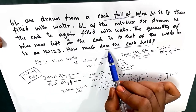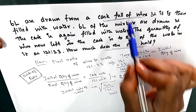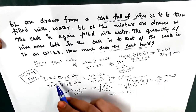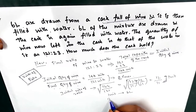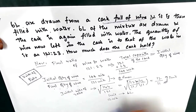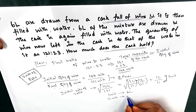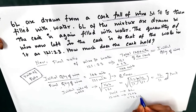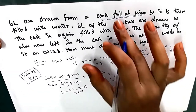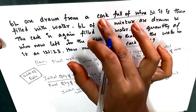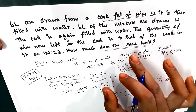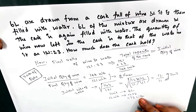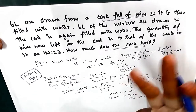The question asks how much the cask holds, which is the initial quantity of wine — 12 units. So 12 units = 12 × 6 = 72 liters. 72 liters is the initial quantity of wine present in the cask, which is the same as the capacity of the cask, meaning the cask can hold 72 liters of any mixture.